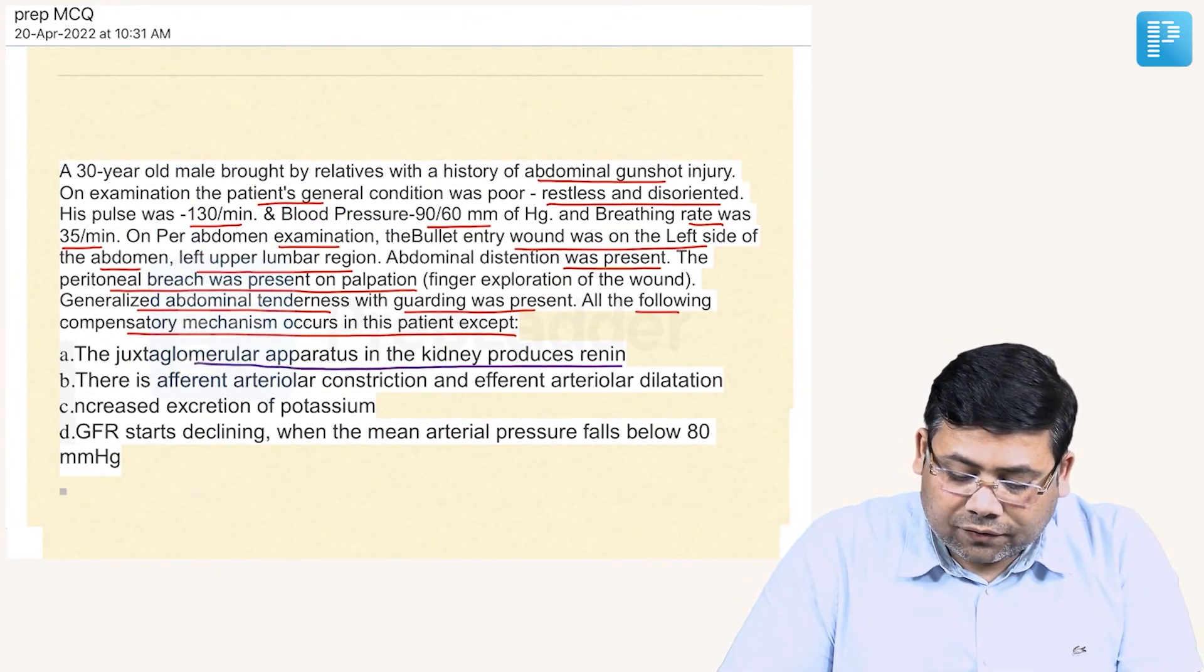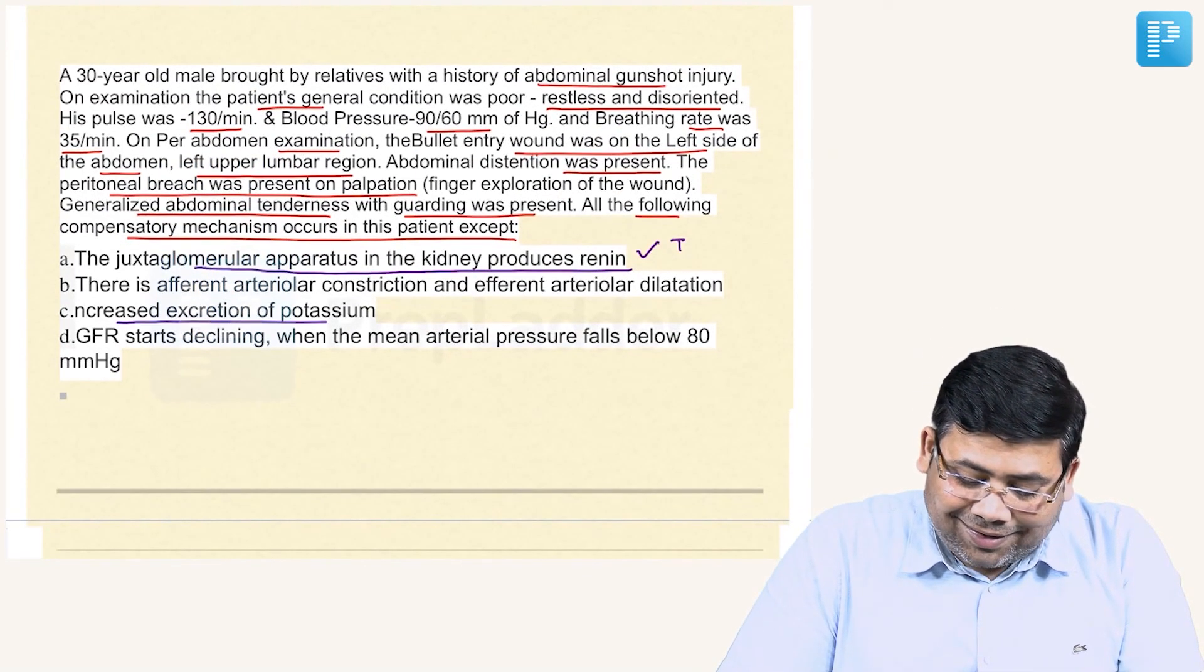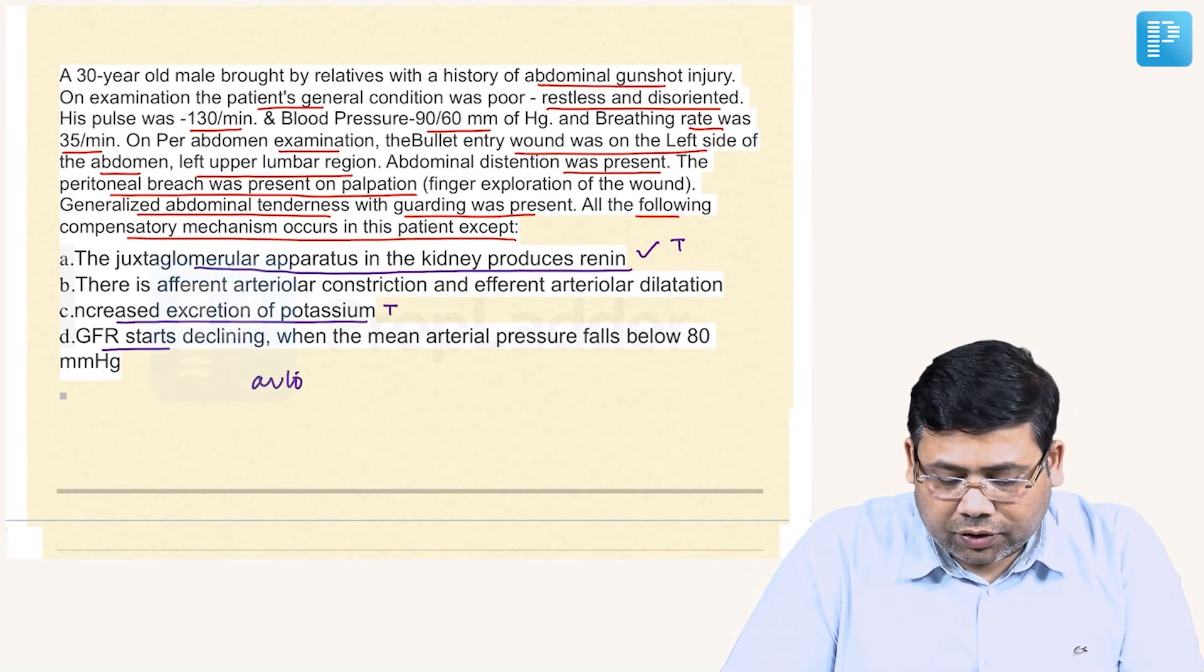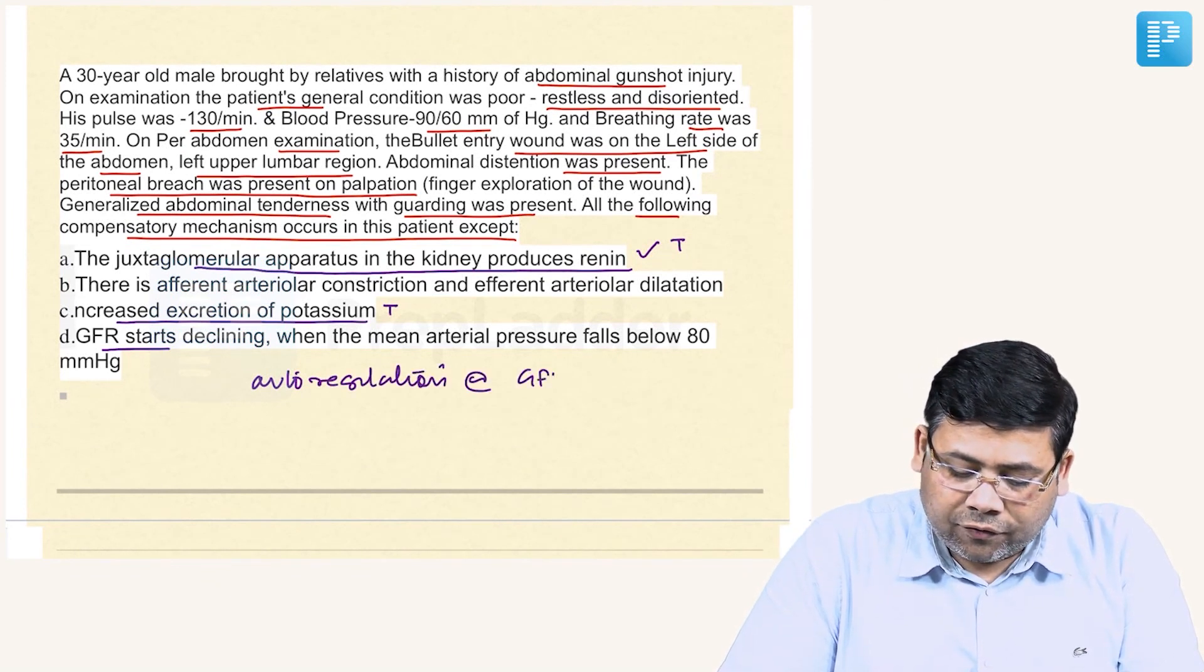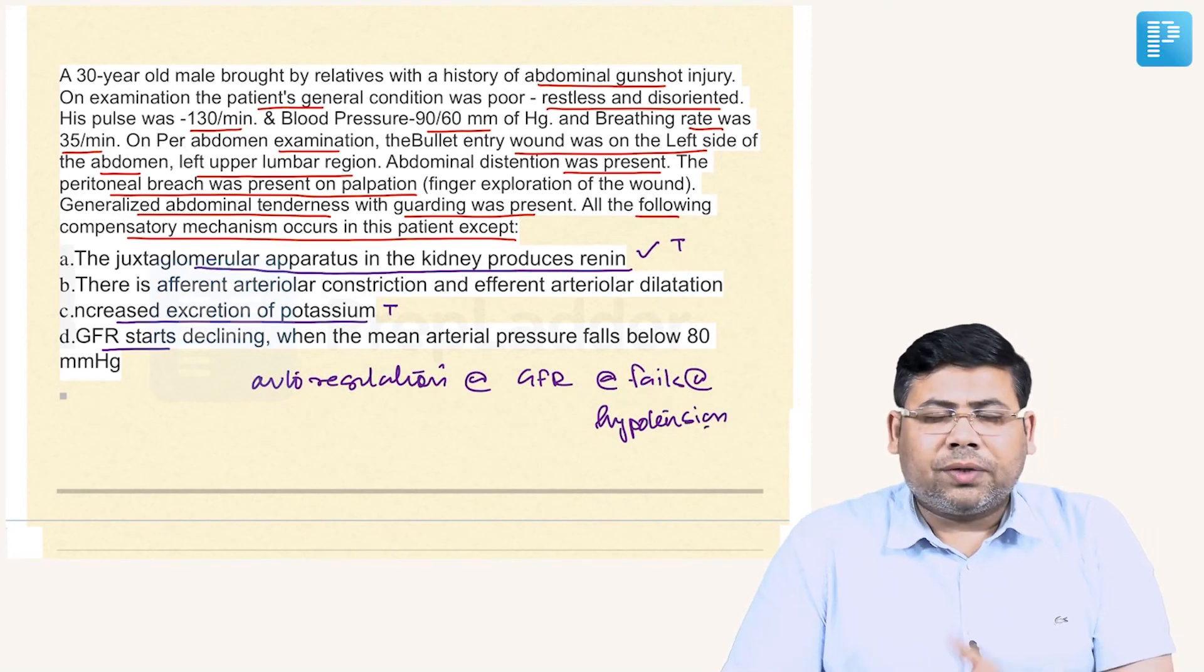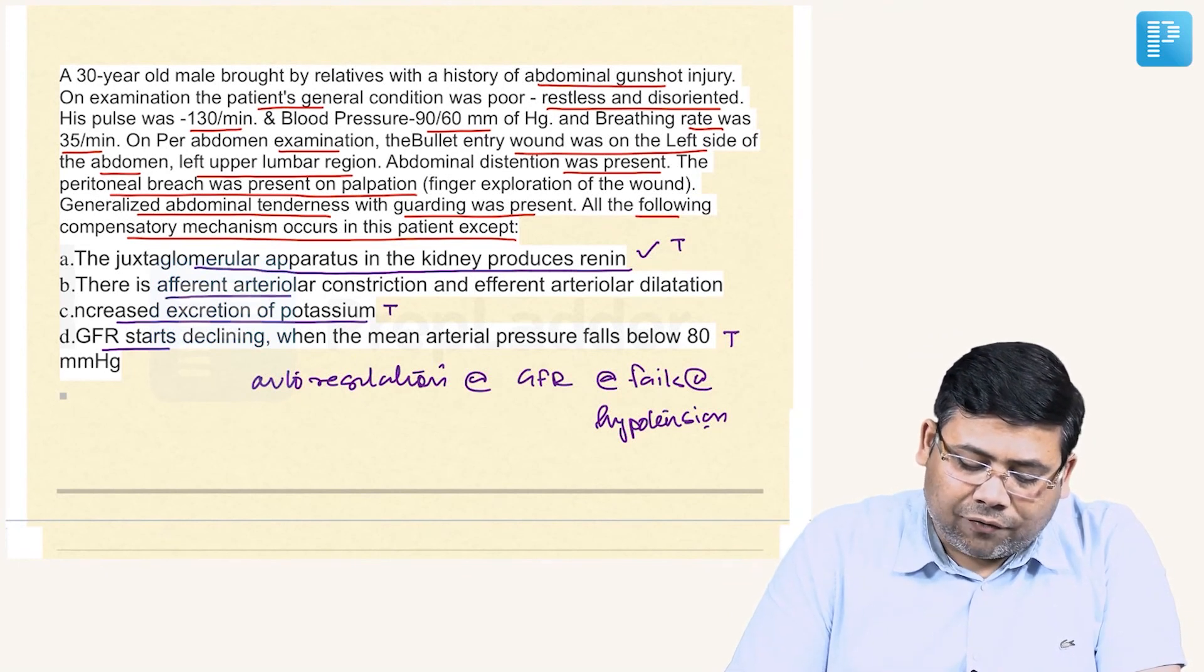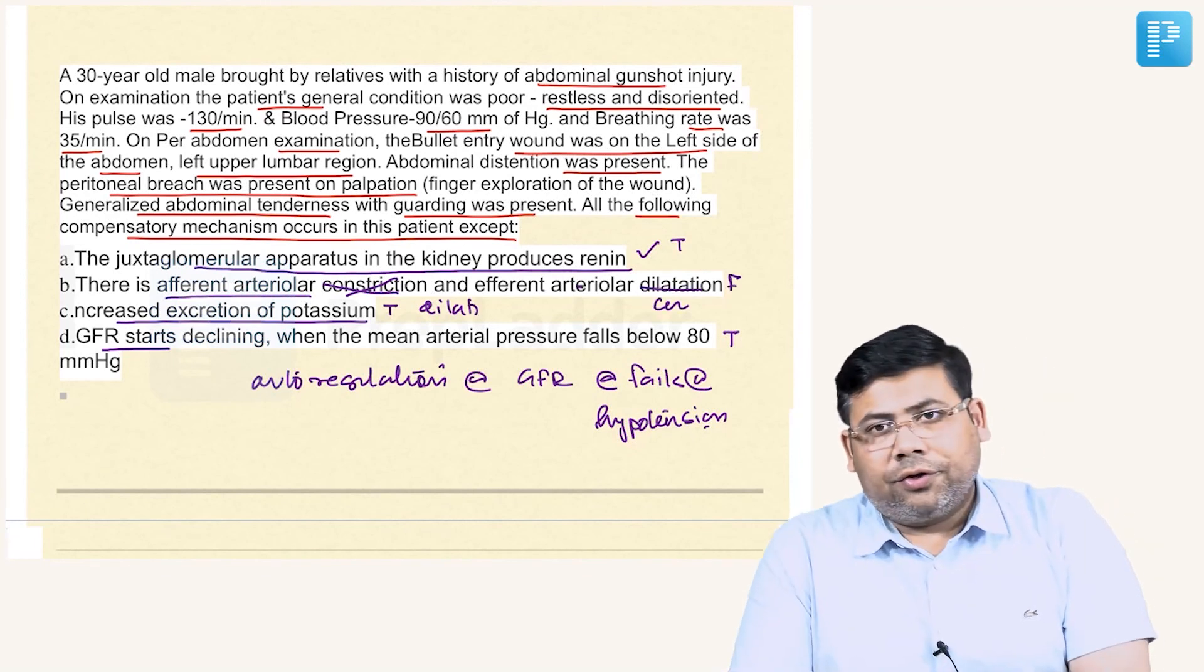The autoregulation of GFR fails when there is hypotension. Under the effect of hypotension, the cutoff is basically at 80 mmHg, where this is going to fail. This is also true. There is efferent arteriole dilatation and efferent arteriole constriction—this point is absolutely wrong.